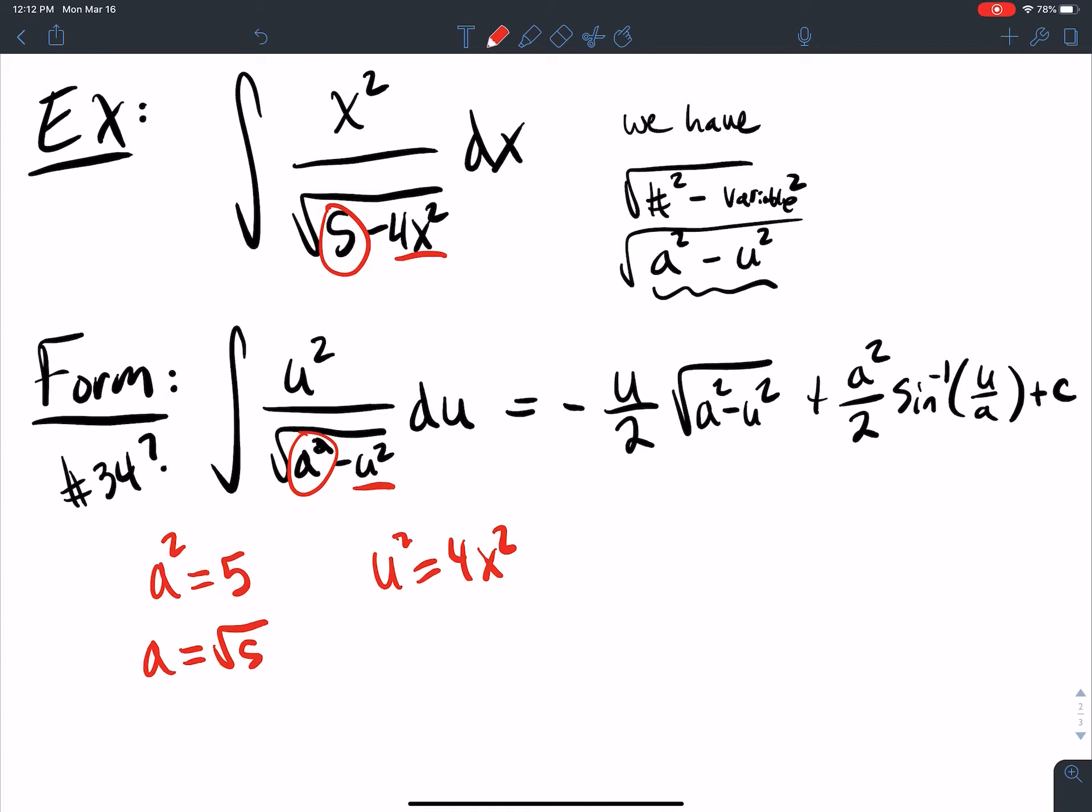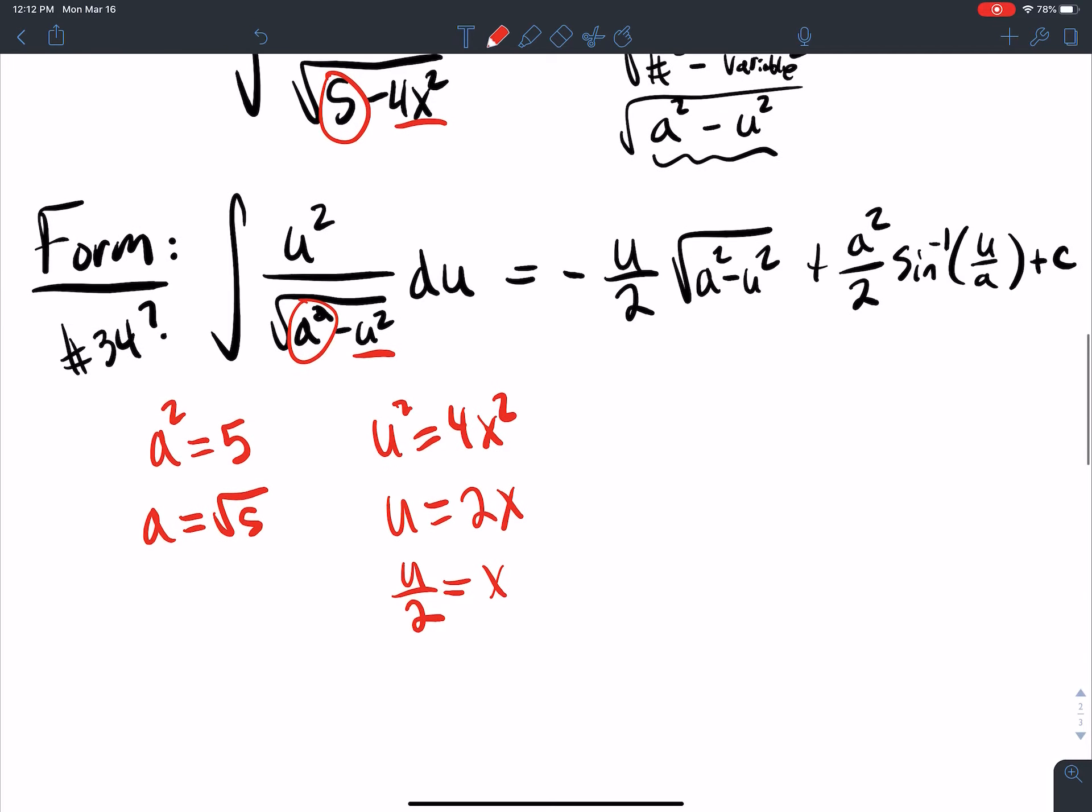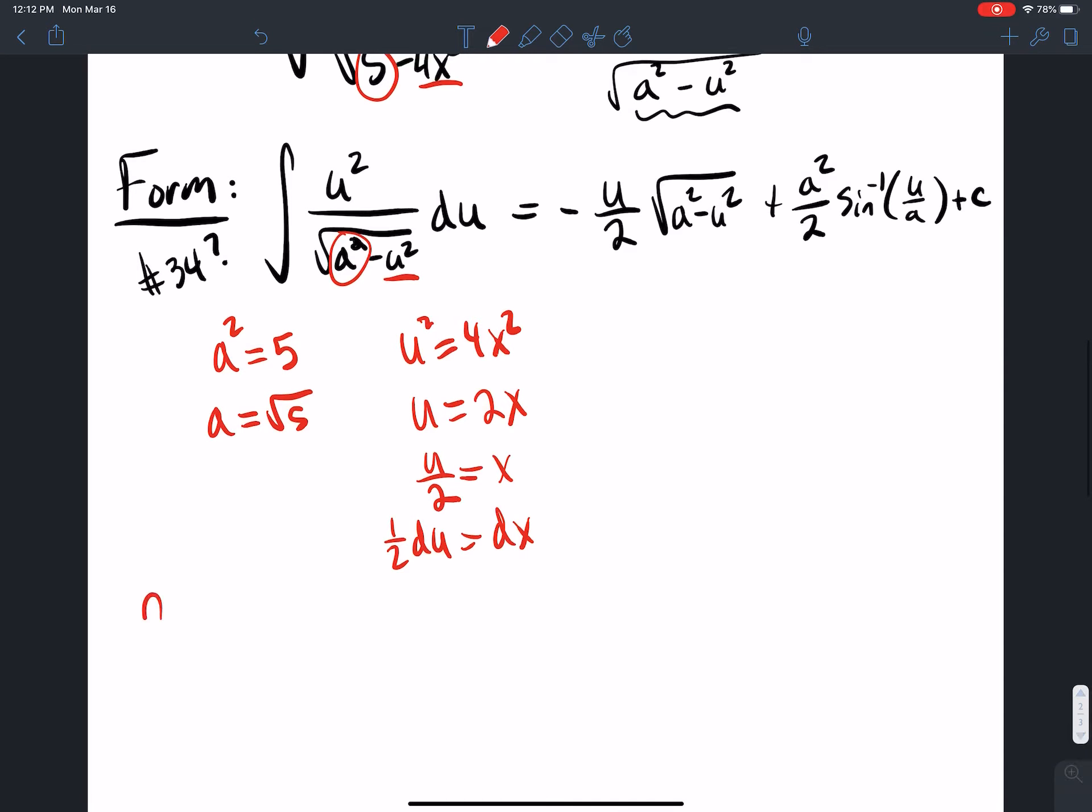Now this is where it gets a little tricky. So that means u is going to be 2x. So that means x is equal to what? That means x is u over 2. And dx is 1 half du. So I need to look at the integral x squared over square root 5 minus 4x squared dx and use my substitution.